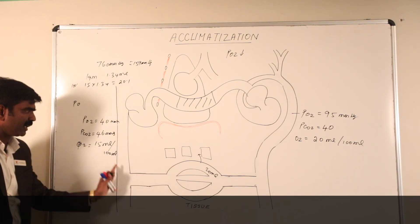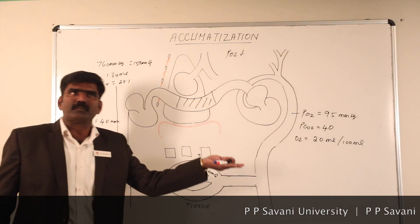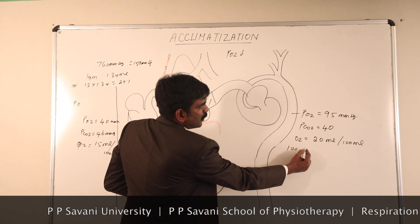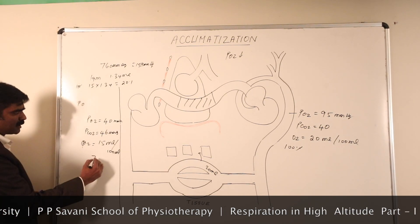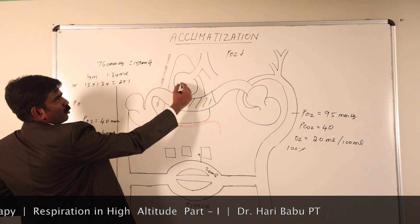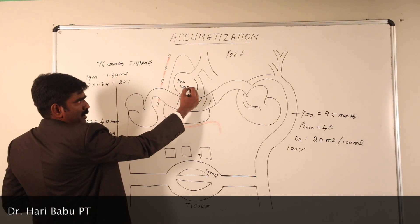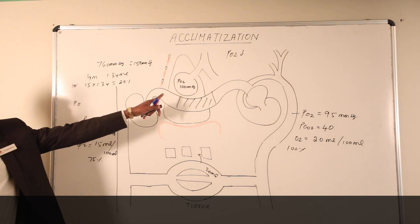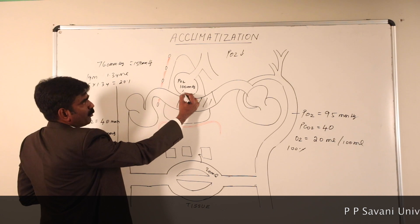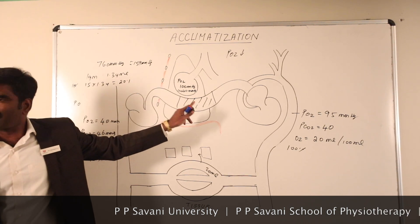Out of the 20 ml of oxygen carried, 5 ml is delivered to the tissues, and 15 ml returns to the lungs in venous blood. Hemoglobin saturation on the arterial side is 100% and on the venous side is 75%. The alveolar partial pressure of oxygen is 100 mmHg and alveolar carbon dioxide is 40 mmHg.